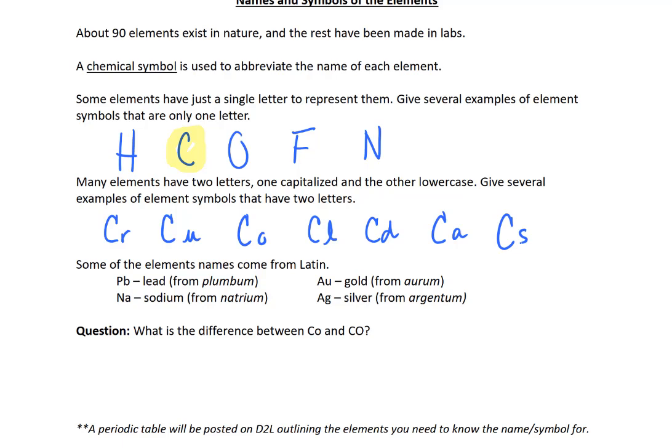Some of the other elements have unusual symbols. For example, lead doesn't have L, E, A, or D in its symbol. Instead, its symbol is Pb. The ones that don't seem logical derive from the original Latin name of that element. Why Latin? Because some of these elements were discovered so long ago that that was typical.